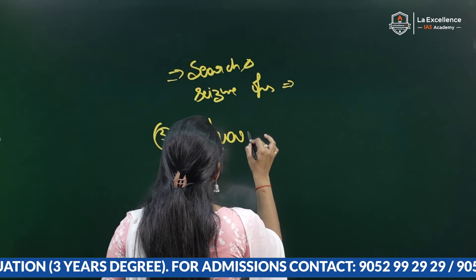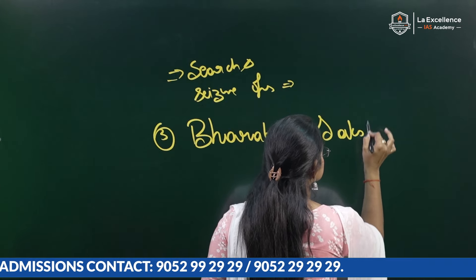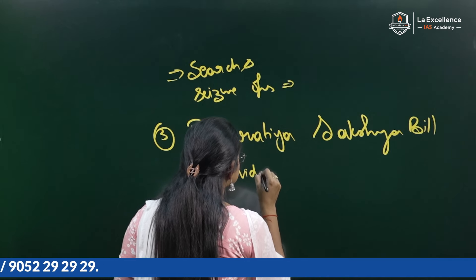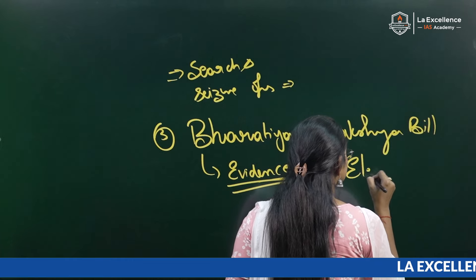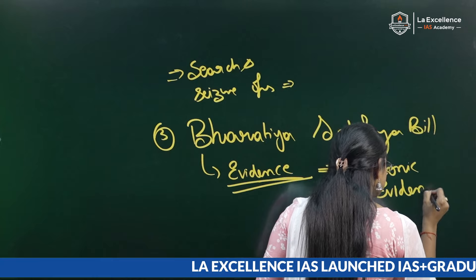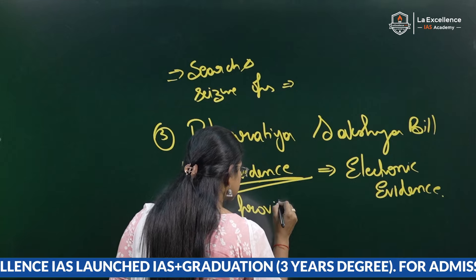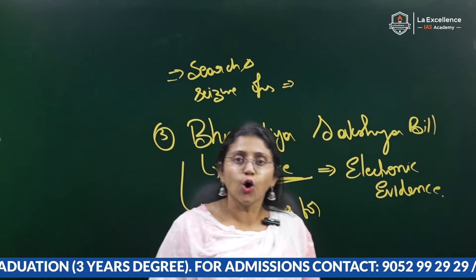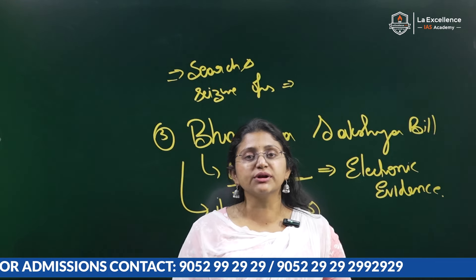The third bill is the Bharatiya Saksha Bill. This bill expands the definition of evidence — now evidence includes electronic evidence as well. It also provides for digitalization of case records, FIRs, and evidences which are taken. These are the key highlighting provisions of these three bills. Thank you.